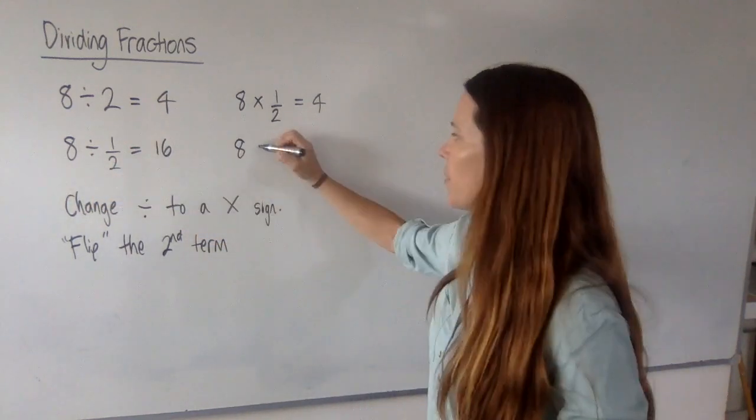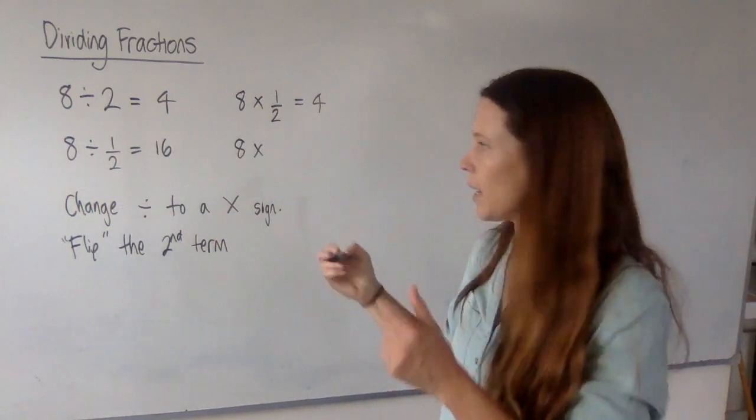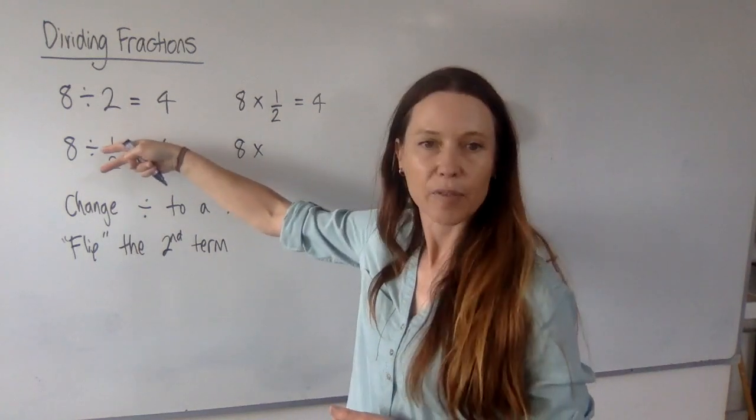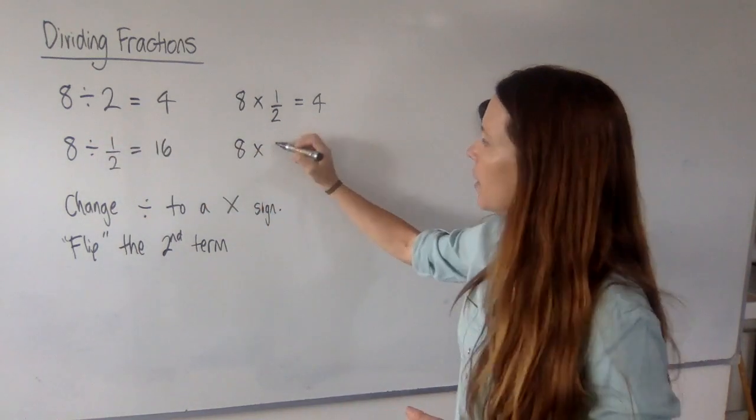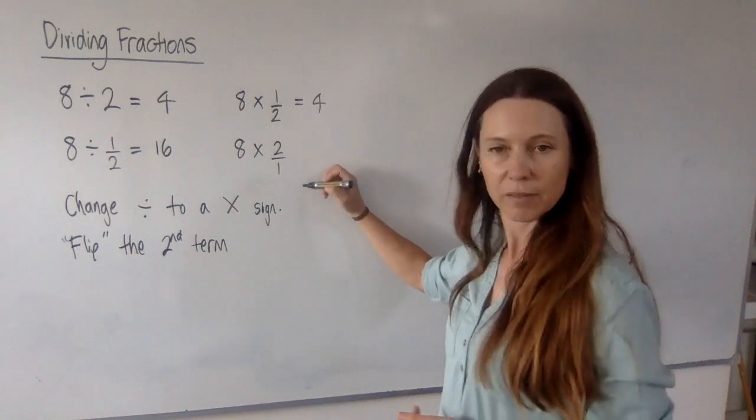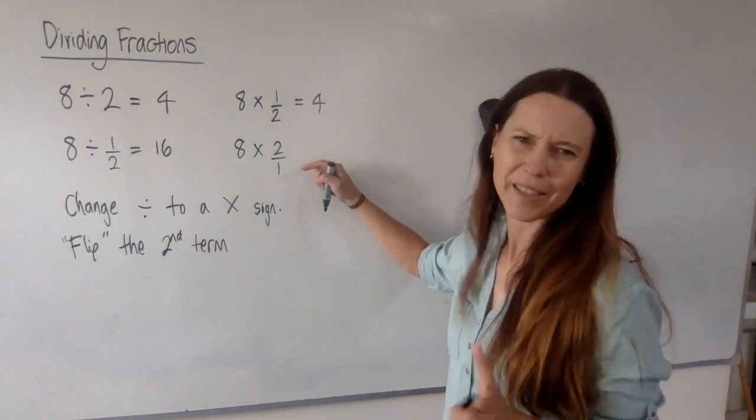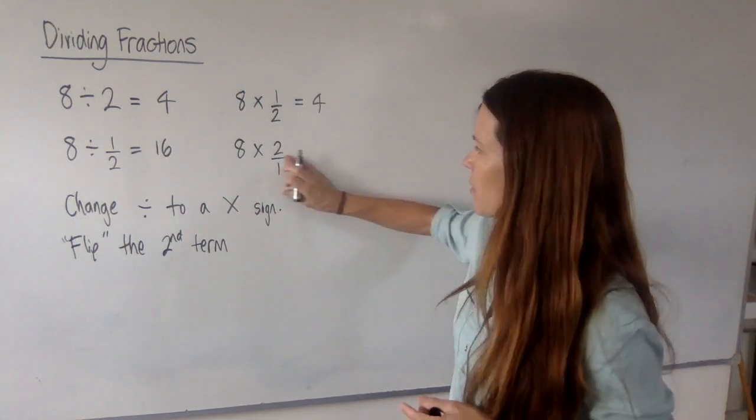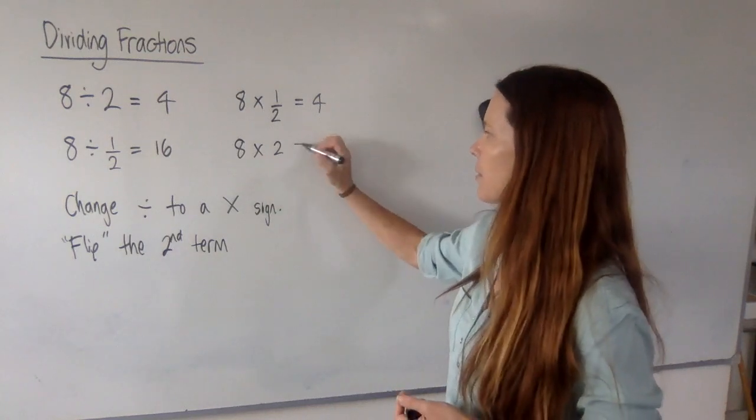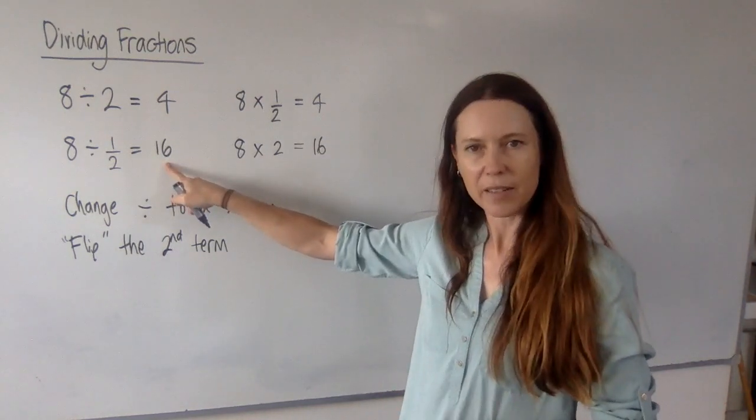We change the divide by 2 times and we flip the half. Now, when we flip this, aren't we going to get 2 over 1? Yep. And 2 over 1, that's really just 2, isn't it? It's just a fancy way of saying 2. And what are 2 times 8? 16. See how we got the exact same answer?